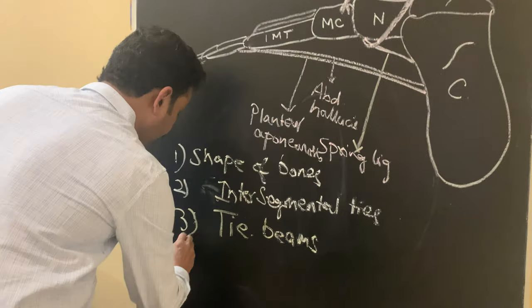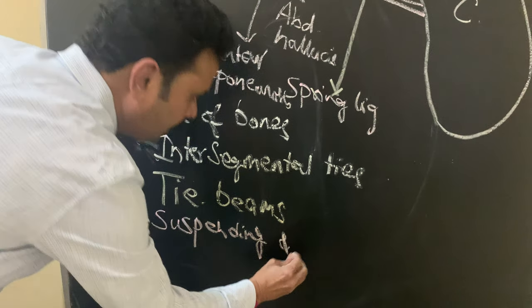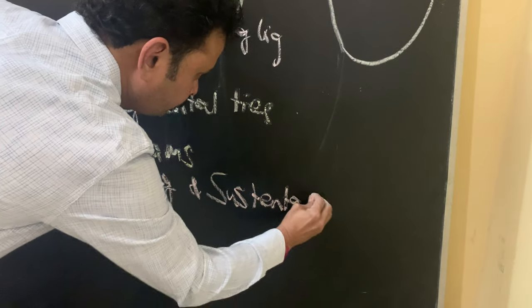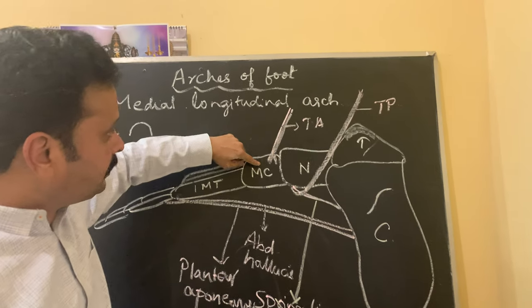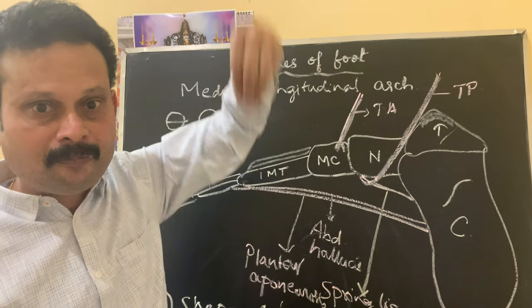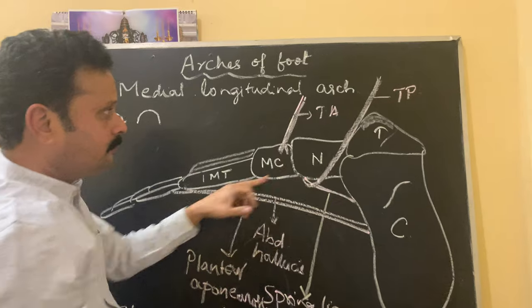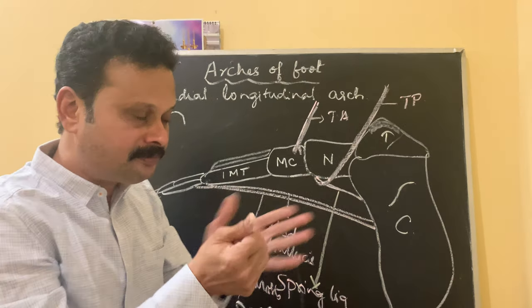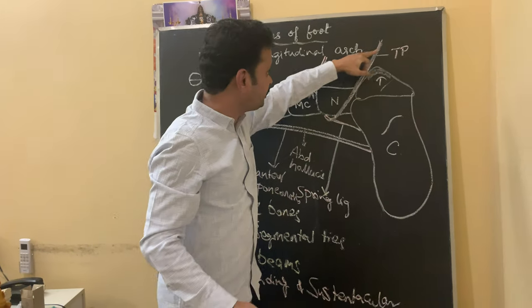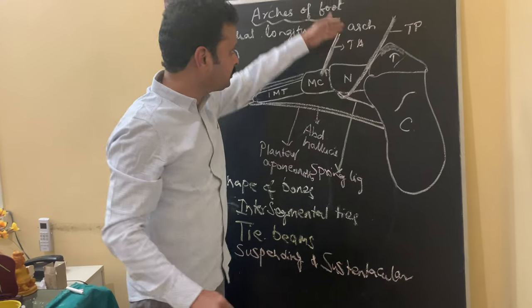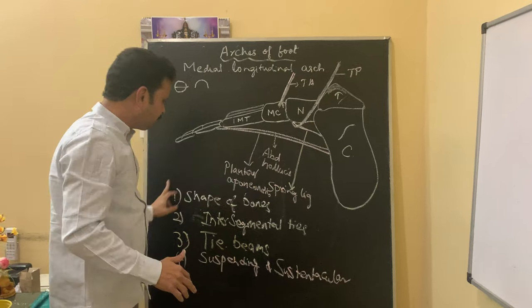Number four: suspending the arch from above and sustentacular action from below. Tibialis anterior muscle, which is attached to the cuneiform bones, suspends the arch from above and helps in its maintenance. Supporting the arch from below is the tibialis posterior tendon, which is inserted onto the tuberosity of the navicular bone, with slips passing onto the medial, intermediate, and lateral cuneiform bones. So tibialis anterior suspends the arch from above, and tibialis posterior holds it from below.